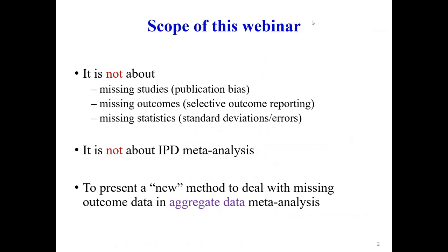Just to give you some details about this webinar: it's about missing outcome data. In meta-analysis terminology, missing data may refer to different things, such as missing studies — the problem of publication bias — missing outcomes, or more often missing statistics, where some studies do not report the standard deviation or other statistics.